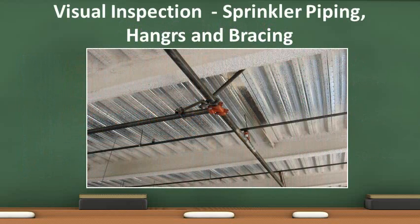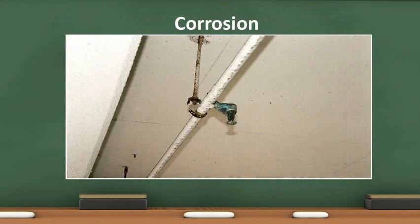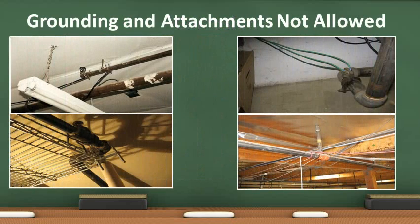Look at the sprinkler piping, hangers, and bracing. They should be in good condition and free of corrosion. All bracing and hangers shall be securely attached. In this photo, the hanger is damaged and the sprinkler head is corroded. Both need to be replaced. The weight of the water inside the pipe may cause it to break. At no time shall any sprinkler system component be used to support non-system items. Grounding of electrical systems is not allowed.